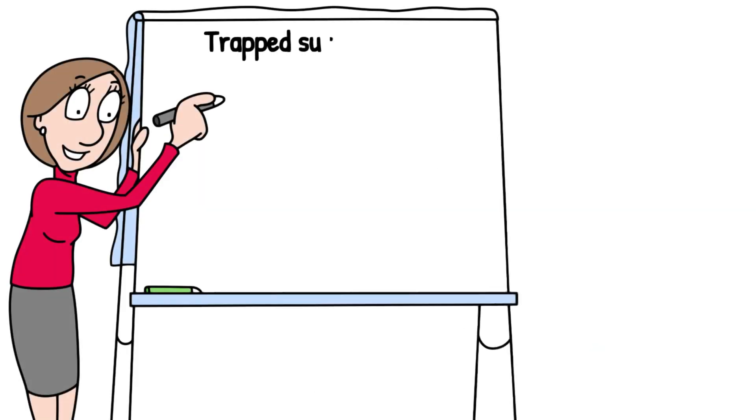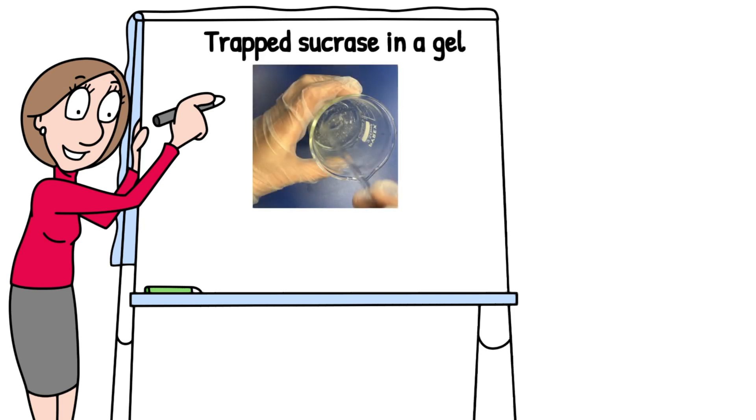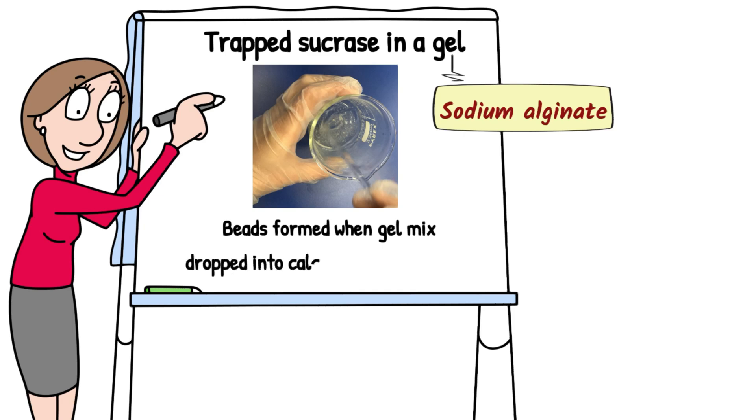Remember doing that practical where you had yeast containing sucrase, and you trapped it in a gel. The gel is sodium alginate, and when you dropped the yeast and sodium alginate mixture into the calcium chloride solution, beads formed and you left them to harden.